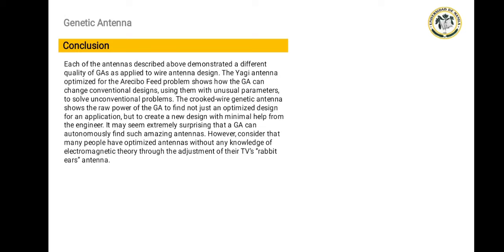Each of the antennas described above demonstrated a different quality of GA as applied to wire antenna design. The Yagi antenna optimized for the Arecibo feed problem shows how the genetic algorithm can change conventional designs using them with unusual parameters to solve unconventional problems. The crooked wire genetic antennas show the raw power of the genetic algorithm to find not just an optimized design for an application, but to create a new design with minimal help from the engineer.